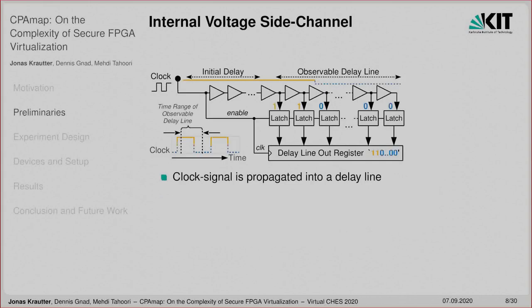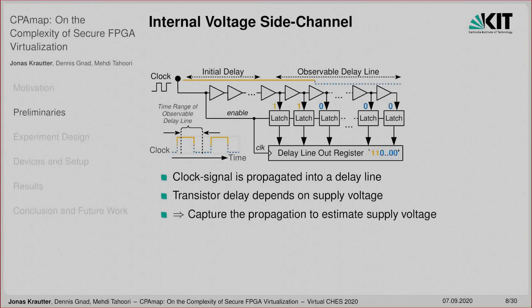There are different ways of measuring voltage fluctuations using FPGA primitives. In our case, a clock signal is propagated into a long delay line. Because the transistor delay depends on the supply voltage, we can estimate the voltage fluctuations by capturing the propagation of the clock signal into this delay line. There is an initial delay as well as an observable part of the delay line where the propagation is captured into registers. The initial delay must be adjusted so that the fluctuations of the clock signal propagation are visible within the observable part. This calibration can be done automatically.